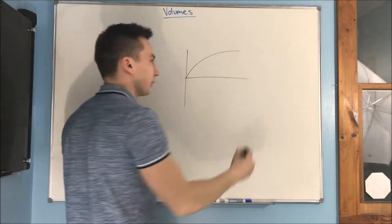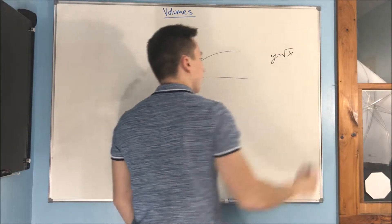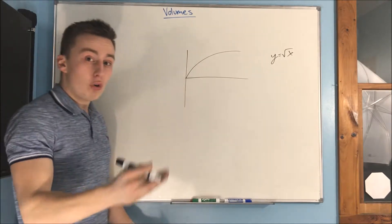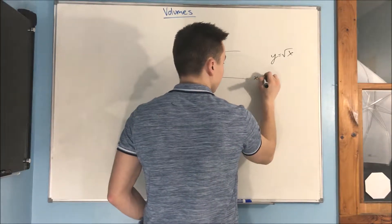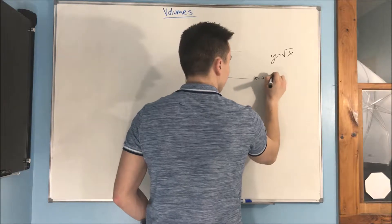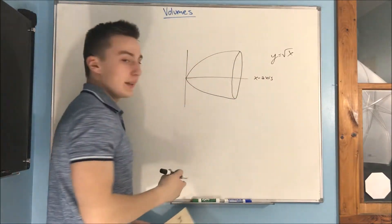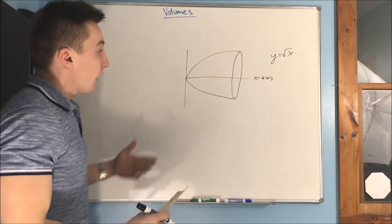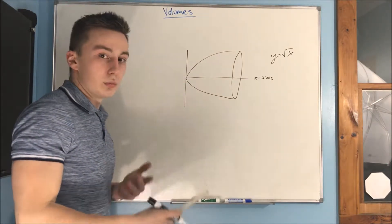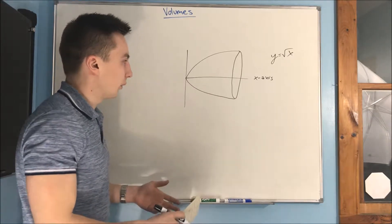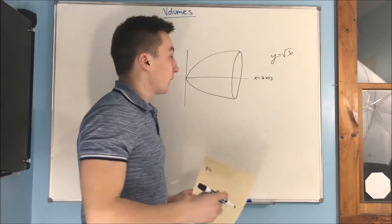We'll be given something like y equals rad x, and we're going to have to revolve that curve around the x-axis. What that's going to give us is something like a cone shape — kind of like a parabolic cone — and we're going to be able to find the volume of this.